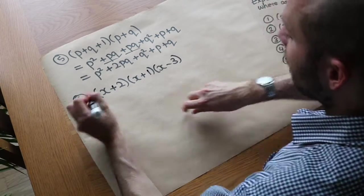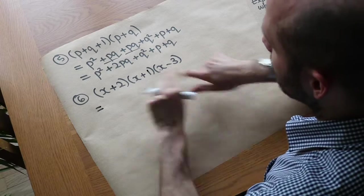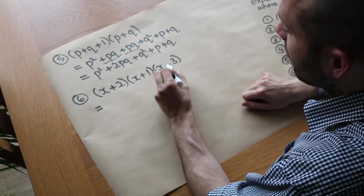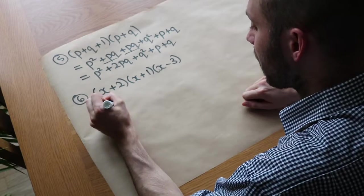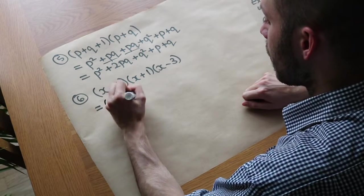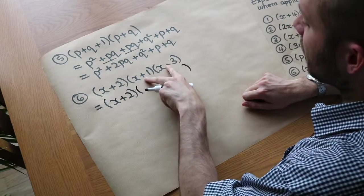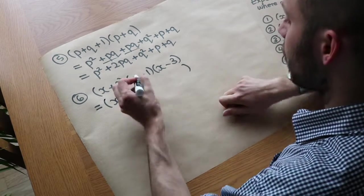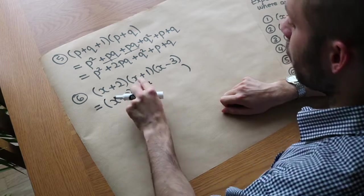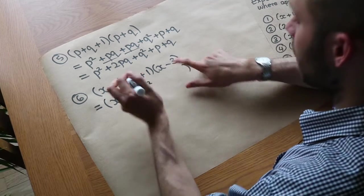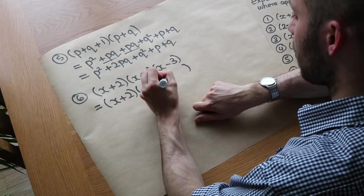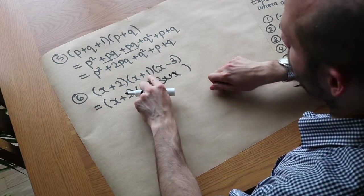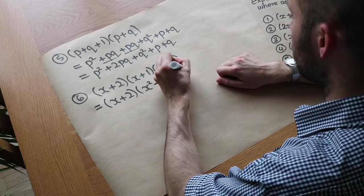The way we handle three brackets is to first expand and simplify two of them. So we leave (x + 2) as it is for now and expand (x − 3)(x + 1). x times x is x squared. x times minus 3 is minus 3x. 1 times x is plus x. And 1 times minus 3 is minus 3.